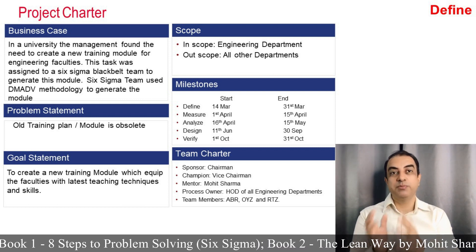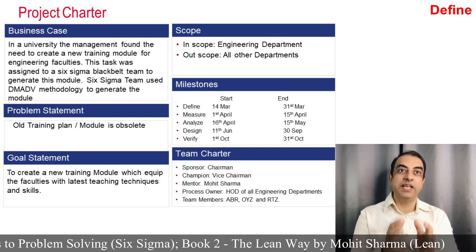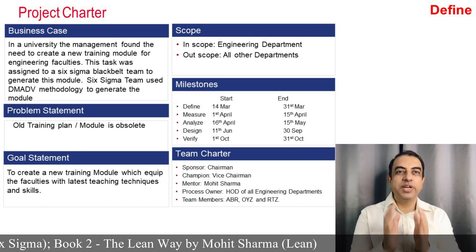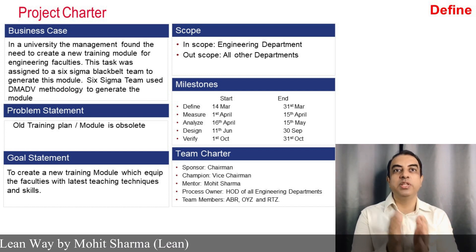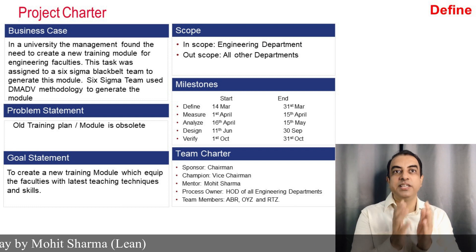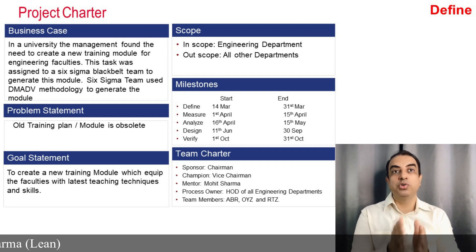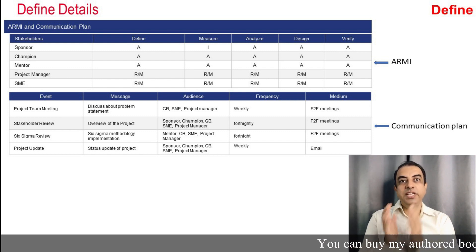We have the chairman as the project sponsor and vice chairman as champion of the project. The goal is to create a new training module which equips the faculties with the latest teaching techniques and skills by October 31st. The team created a RACI chart to define the roles and responsibilities of all the stakeholders in each phase of the project.